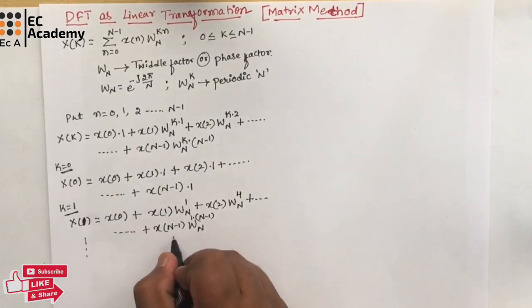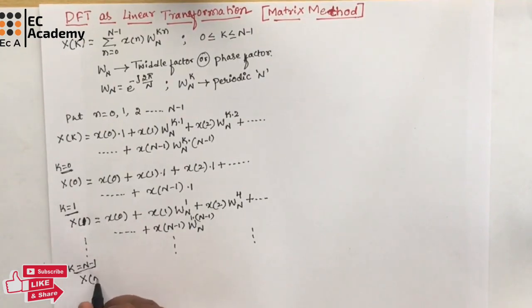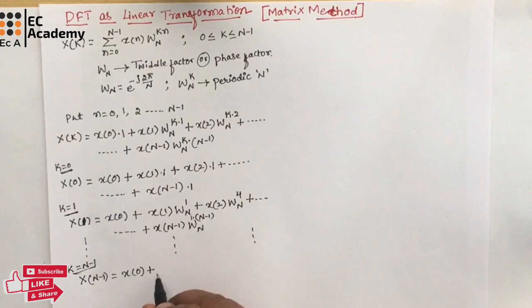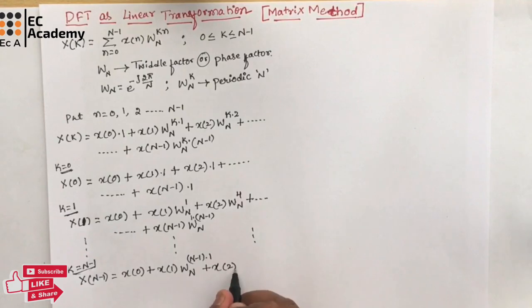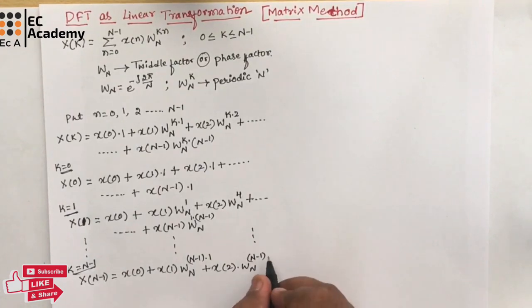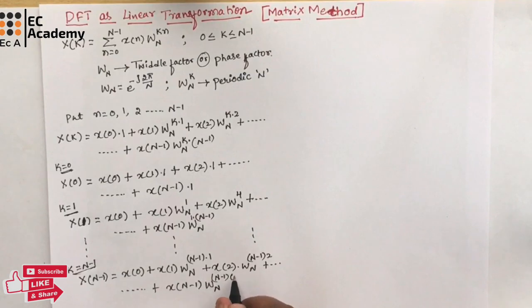In the same way, if we put k = N-1, then X(N-1) = x(0) + x(1)·W_N^(N-1) + x(2)·W_N^(2(N-1)) + ... + x(N-1)·W_N^((N-1)(N-1)).